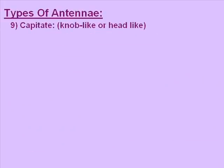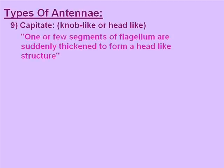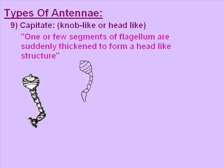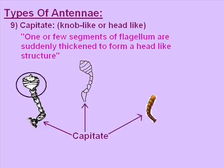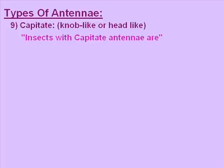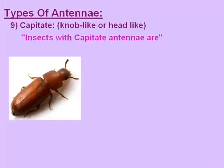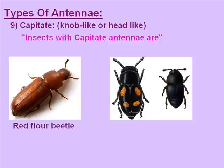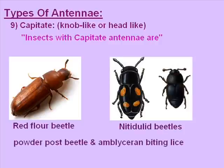The ninth type of antenna is capitate, meaning knob-like or head-like structure. One or a few segments of the flagellum are suddenly thickened to form a head-like structure. The pictures and arrows show the capitate antennae. Insects with capitate antennae are red flower beetle, nidy dually beetles, powder post beetles, and ambrosia bark beetles.